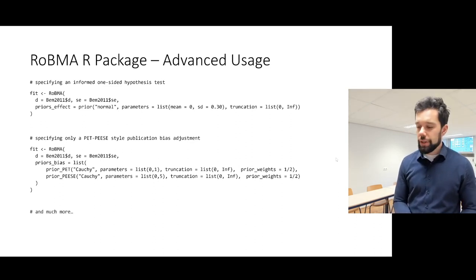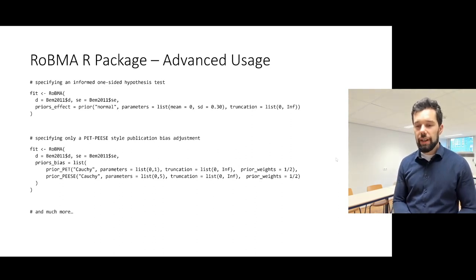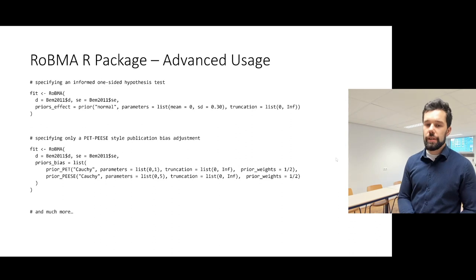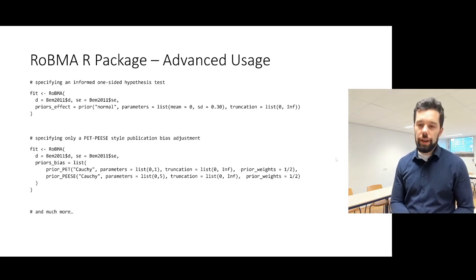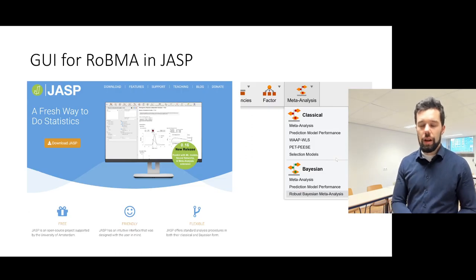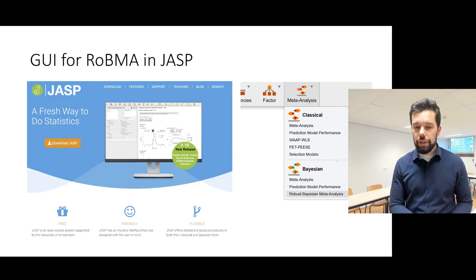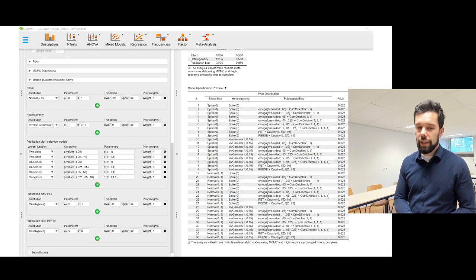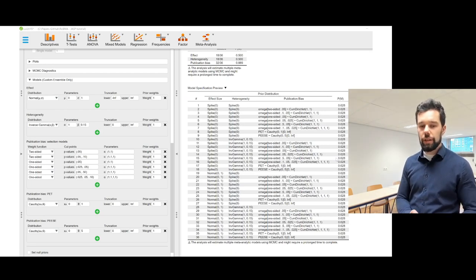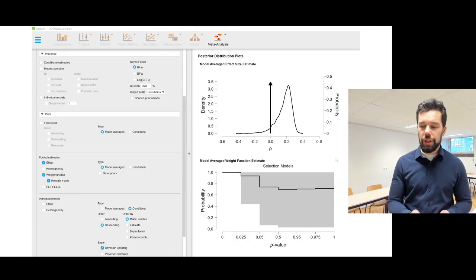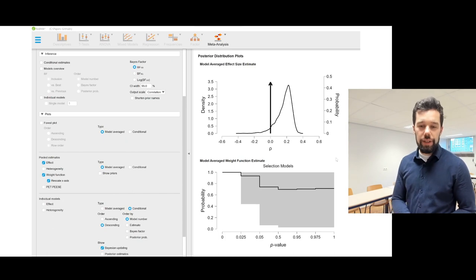If you want to use the ROBMA methodology in teaching meta-analysis but your students are not sufficiently skilled in R and you don't want to scare them away, we also implement ROBMA in JASP, along with additional publication-bias adjustment methods. You can use the JASP graphical user interface to run all of these analyses and specify all parameters with your mouse via point-and-click. Here are a few screenshots from JASP visualizing the corresponding summaries and output.